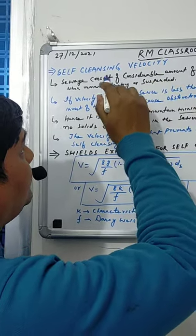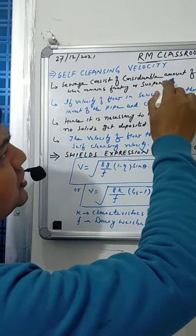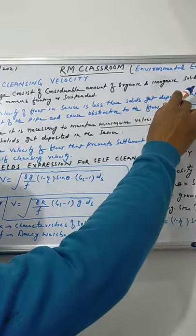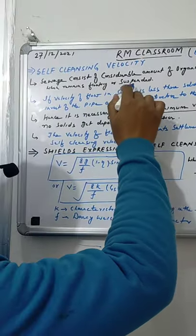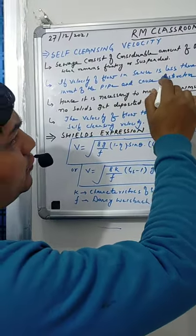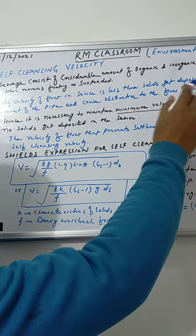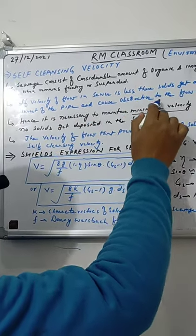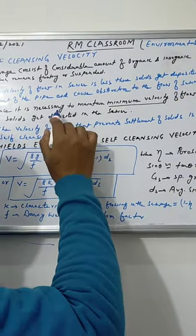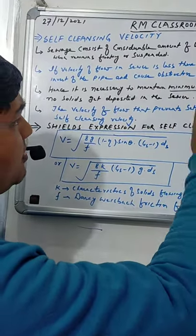Self cleansing velocity: sewage consists of considerable amount of organic and inorganic solids which remain floating or suspended. If velocity of flow in sewer is less than the solid gets deposited at the invert of the pipe and causes obstruction to the flow of sewage.